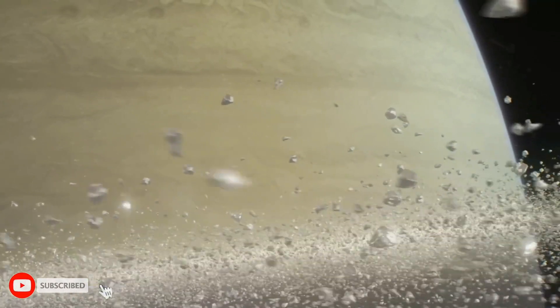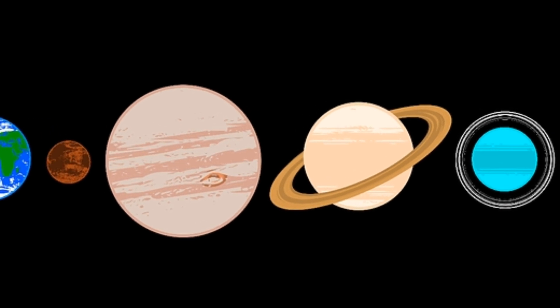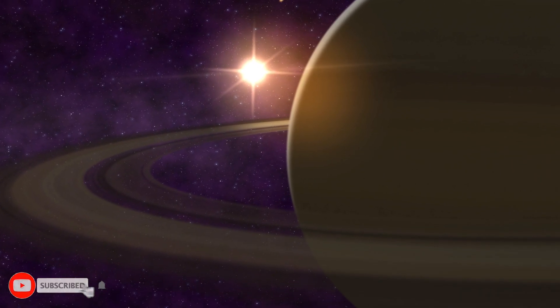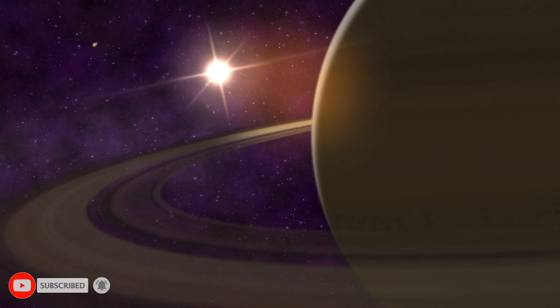Scientists are warning that the rings could disappear within just 100 million years, a very short time in space history. Scientists estimate that this ring rain drains an amount of water products that could fill an Olympic-sized swimming pool from Saturn's rings in half an hour.